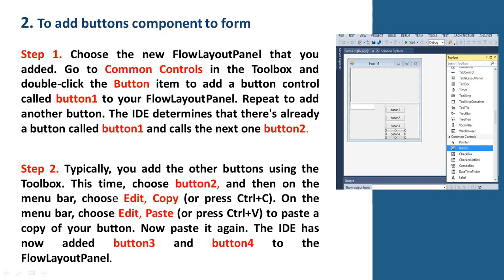Step 2: Typically you add all the buttons using the toolbox, but this time choose Button2 and then on the menu bar choose Edit > Copy. On the menu bar choose Edit > Paste to paste a copy of your button. Now paste it again. The IDE has now added Button3 and Button4 to the flow layout panel.